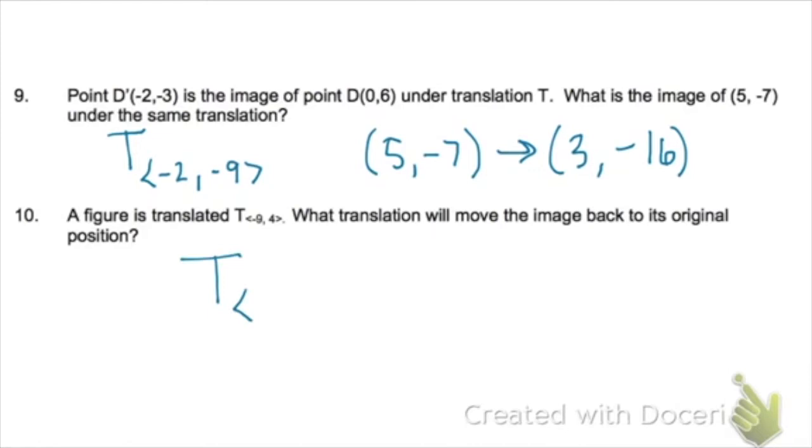On 10, a figure is translated ⟨-9,4⟩, so to undo it, you need to take it ⟨9,-4⟩.